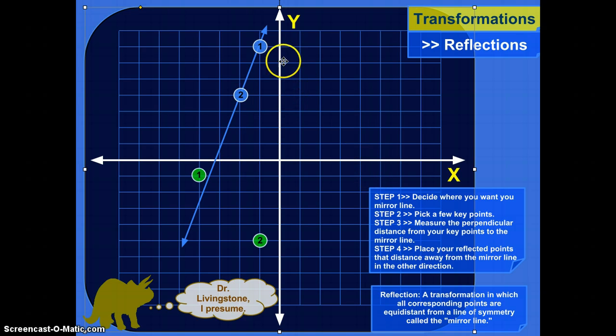Now we measure the distance straight to the mirror line and put the corresponding points the same distance away. Point one is one unit away from our mirror line here. So I'm going to make the new point one one unit away. Here's the mirror line and then one.